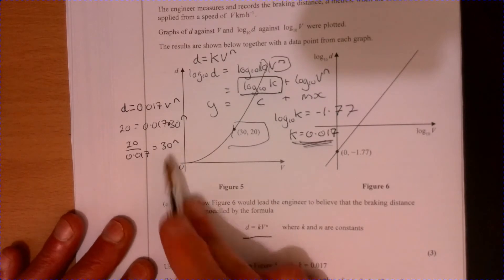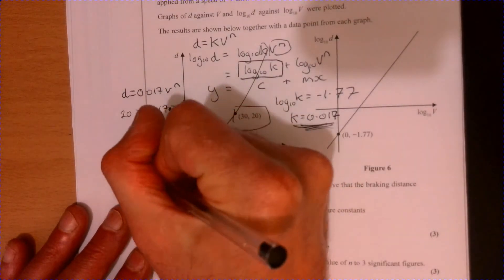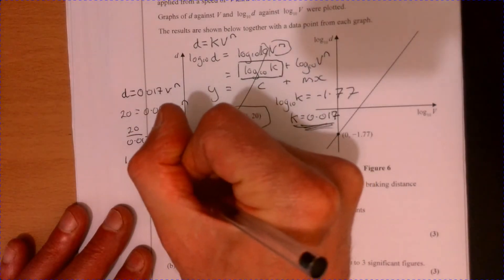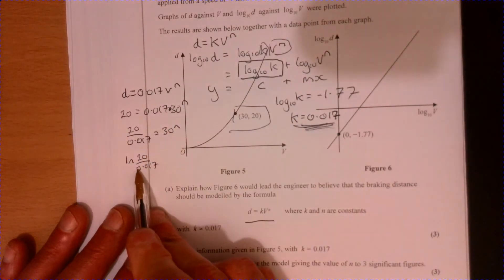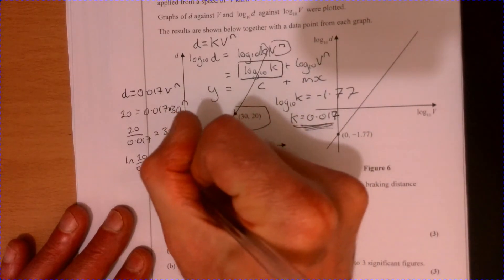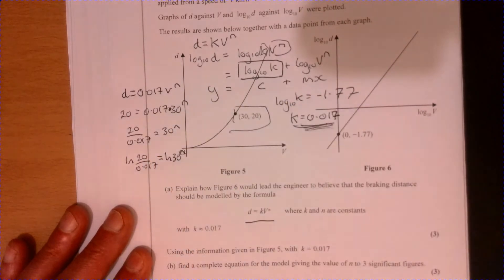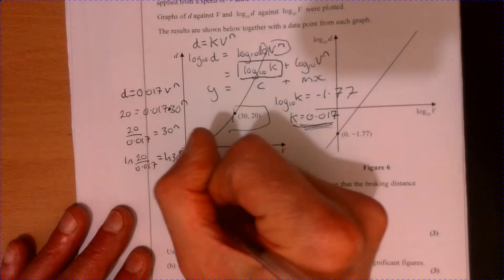So 0.017 and that equals 30 to the n. Now the best way of getting n out here, I suppose you could do it by trial and error if you wanted to, but the best bet is to take logs of both sides. If you take logs of both sides, don't worry about this, it's just the number, equals the log of 30 to the n. That pulls that n out, using your base log laws.